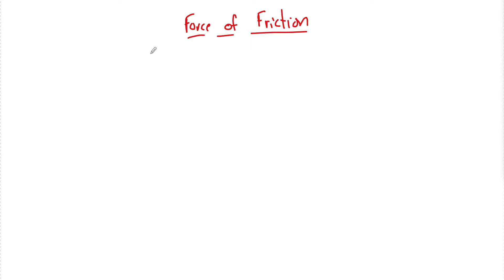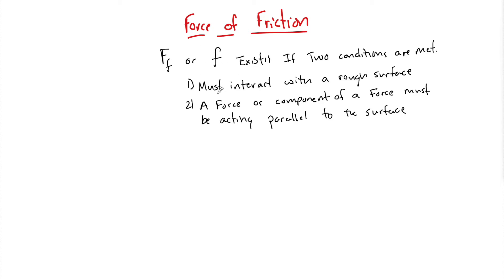We write the force of friction as the symbol F sub F, or just F depending on what you see — kind of like a script-looking F. And it exists if two conditions are met: an object must interact with a rough surface, and a force or component of a force must be acting parallel to the surface.